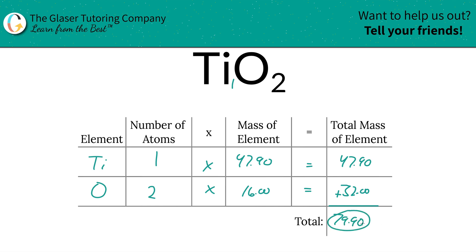And it works out to be 79.90. Oh wait, that's bromine's mass. Cool. The units here are going to be in grams per mole, because we're finding molar mass. And that's all there is to it — now you know how to find the molar mass of titanium four oxide. Thanks for watching and check out our channel. We have thousands of other videos just to help you out. Take care.